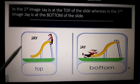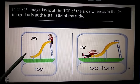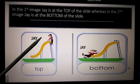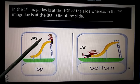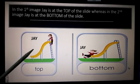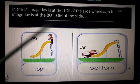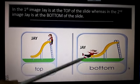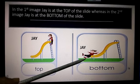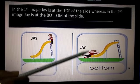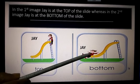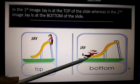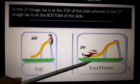Now, in the first image, J is at the top of the slide, whereas in the second image, J has slid down — that is, he is at the bottom of the slide.